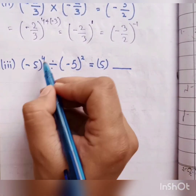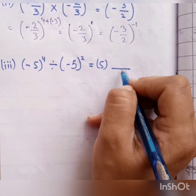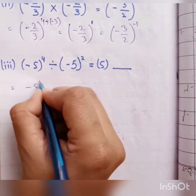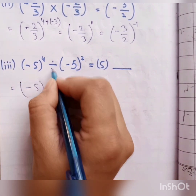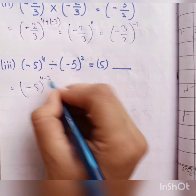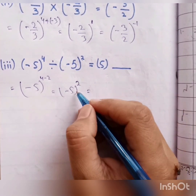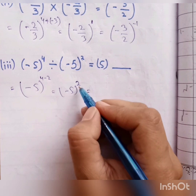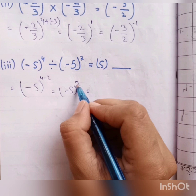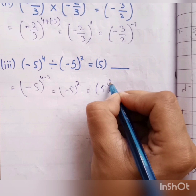Next blank: minus 5 power 4 divided by minus 5 power 2 equals blank. The base is the same and we have division, so powers subtract: 4 minus 2 gives 2. When the power is an even number, the answer is positive. So we write 5 power 2 in the blank.